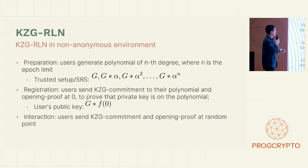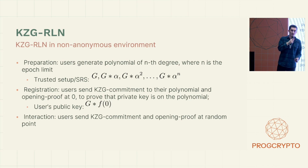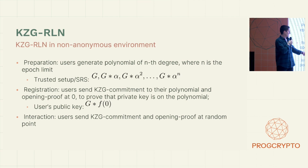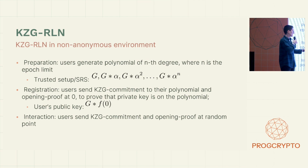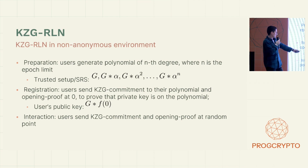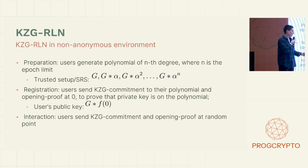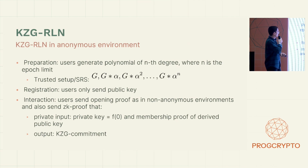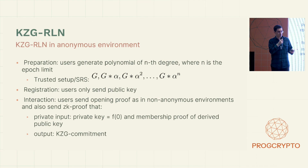For KZG RLN in non-anonymous environments: in preparation, we generate a polynomial of Nth degree where N is the epoch limit and do a trusted setup of size N. For registration, users send a KZG commitment to their polynomial and an opening proof at the zero point to prove that the private key is on the polynomial. The user's public key is the generator multiplied by F(0), so we don't actually expose the private key — we just send the public key, and we're still able to verify the KZG opening. For interaction, we send the KZG commitment and opening proof at a random point, usually the hash of the message.